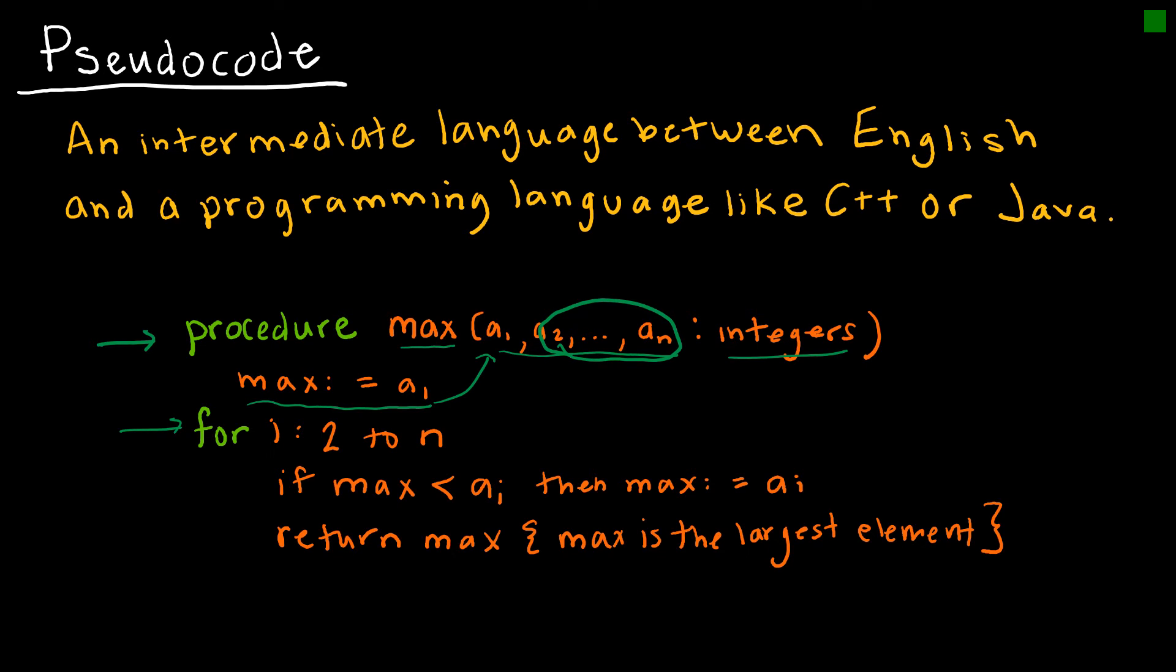if the max is less than a_i, which means if the max is less than our new value, because our new value is a sub 2, a sub 3, a sub 4, etc., then our new max is that value. Return, this is what tells us what the final output would be. So the return is the max where max is the largest element. Now, I want to point out that this here is just a note. It's a comment that helps us as a person understand, but it's not something that the computer would read.